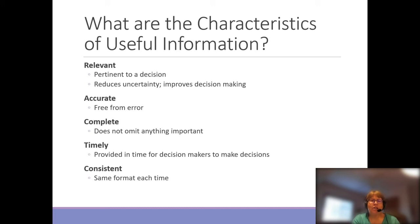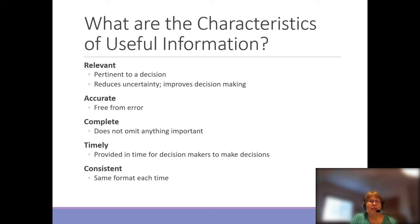The accounts receivable aging report is pertinent to the decision — this is our first characteristic: relevant. By having relevant information, we're reducing uncertainty and thus improving decision making. Information that is not relevant would be how much we owe vendors, since vendors are not the same as customers. Weather patterns are also not relevant. Things that cloud the data without adding value are not relevant.